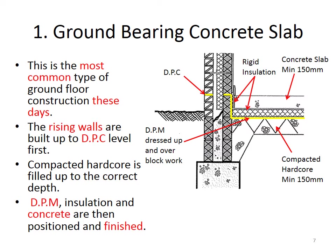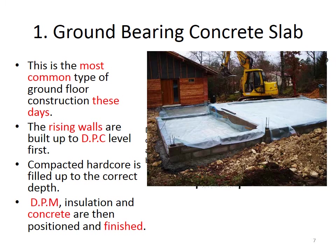Then compacted hard core is filled up to the correct depth — the minimum thickness of hard core is 150 millimeters. This is levelled out and compacted using a compacting vibrator plate, or wacker plate. After the hard core is compacted, we have our DPM, or damp proof membrane, placed on top of the hard core. Sometimes a small blinding layer of about 10mm of sand is put down on top of the hard core to prevent the DPM from getting punctured. This damp proof membrane has to be dressed up and over the blockwork to coincide with the DPC level.